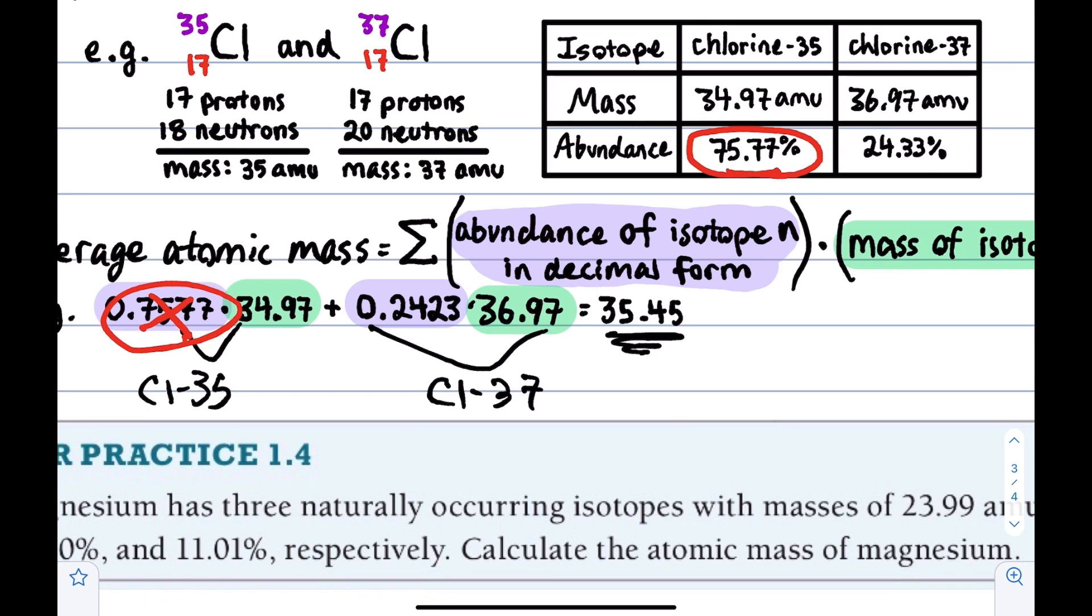And the other option for what has sometimes been done is they might say there is a hypothetical element or there is a new element that's been discovered on planet I don't know what, and you are tasked as a scientist with finding the average atomic mass, and you're given the data, and it's not going to be an element from the periodic table. It's going to be something that your teacher made up. So that's how you might be tested on this.